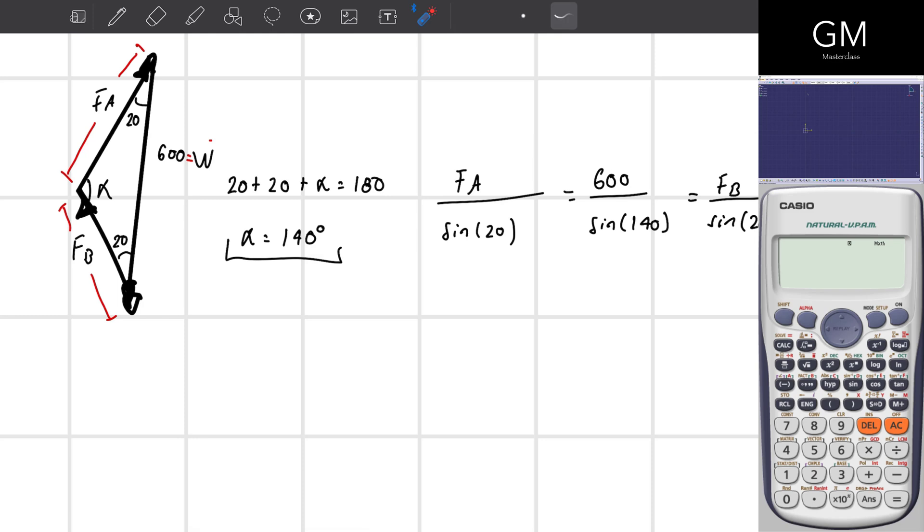In this case, alpha is equal to 140 degrees. And this is the same as having F_B divided by the sine of 20. Why is that? Because this part of the equation is coming from here. As you can see, I have the magnitude and the opposite side is this one. The same goes for this part. I have the magnitude and the opposite angle, and the opposite angle is alpha in this case. And the same goes for this one.